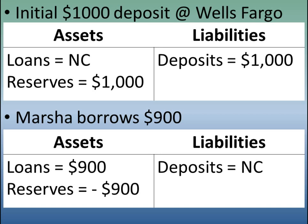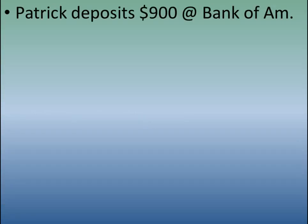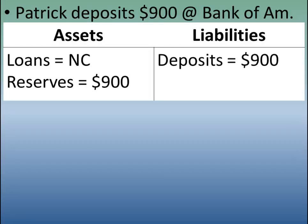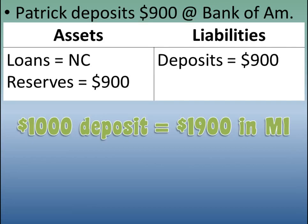Marsha takes that $900 and buys a patio set from Patrick. Patrick deposits the $900 at his bank, Bank of America. On Bank of America's T-account, there's no change in loans, but reserves increase by $900, and they now have a new $900 liability owed to Patrick. With just two steps, that initial $1,000 deposit at Wells Fargo has led to total liabilities in the banking system of $1,900 — the $1,000 from the initial deposit and $900 from Patrick's deposit. So the $1,000 deposit led to $1,900 in total M1.